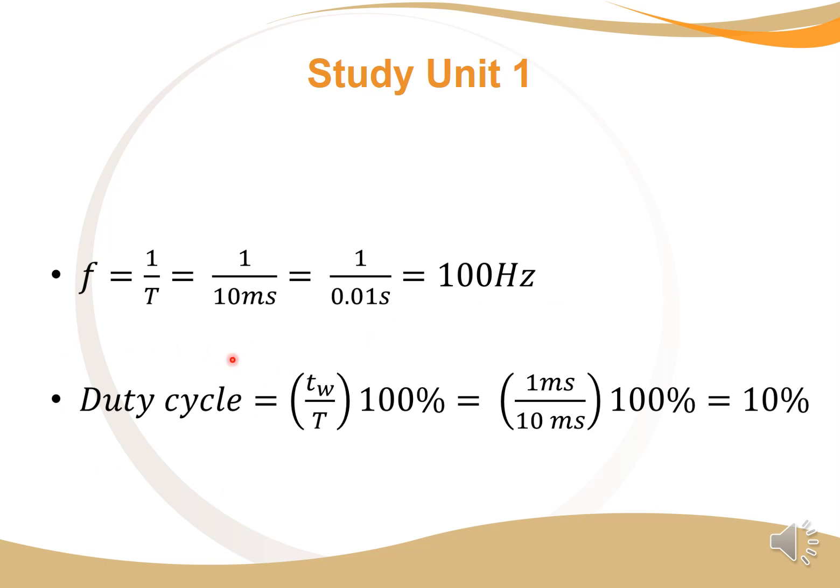Here we work out the duty cycle with the pulse width, which we said was 1 millisecond divided by the 10 milliseconds of the period. Here we don't need to convert, as the two units, milliseconds, milliseconds will cancel out. But if you want to be 100% sure, you convert it to seconds every single time. And then this is 10%. So this means that the wave is high 10% of the time.